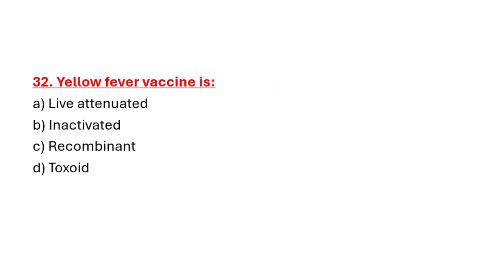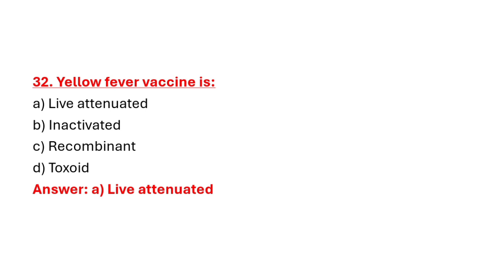Question 32: Yellow fever vaccine is. Option A: Live attenuated. Option B: Inactivated. Option C: Recombinant. Option D: Toxoid. Correct answer is Option A: Live attenuated.